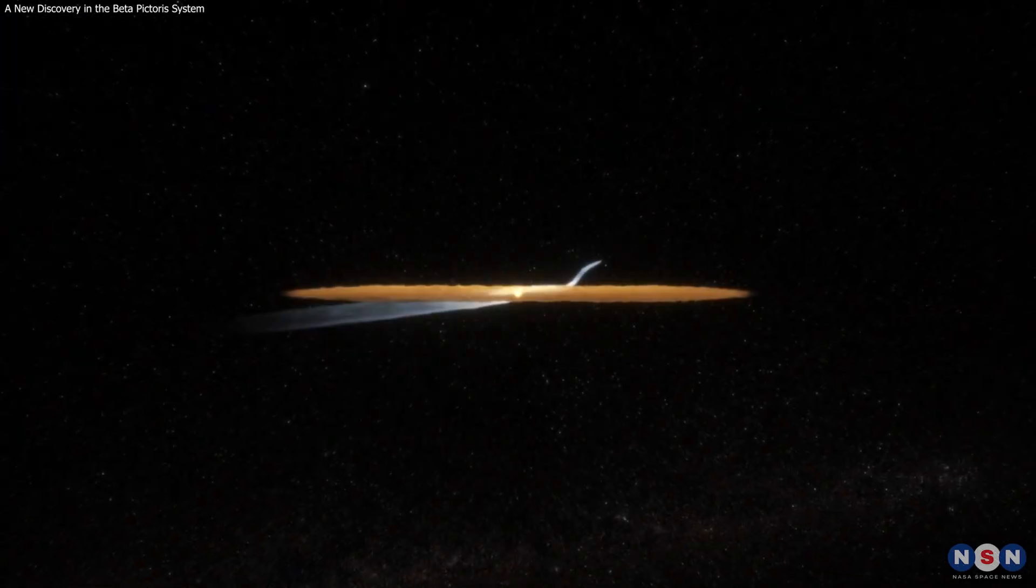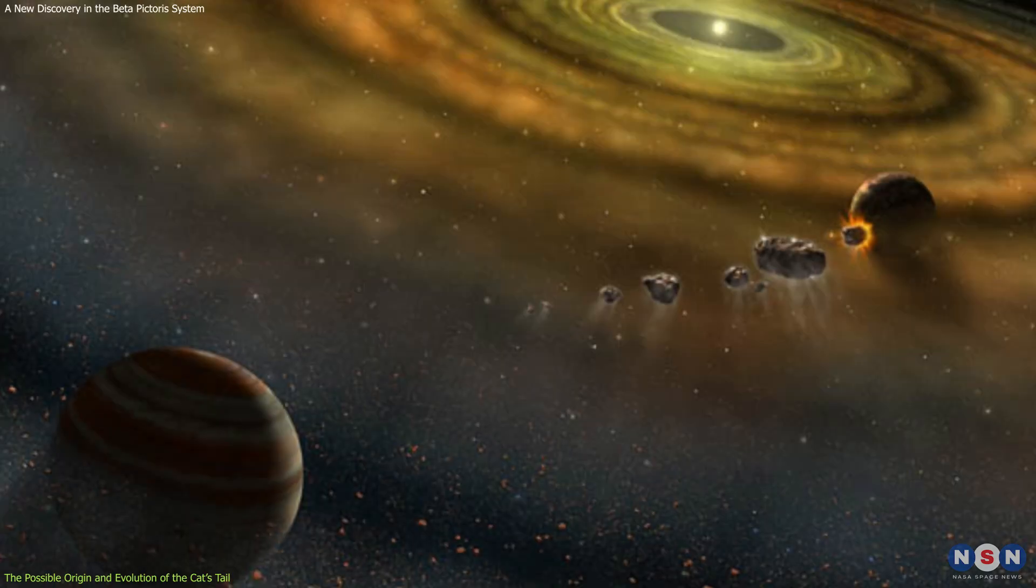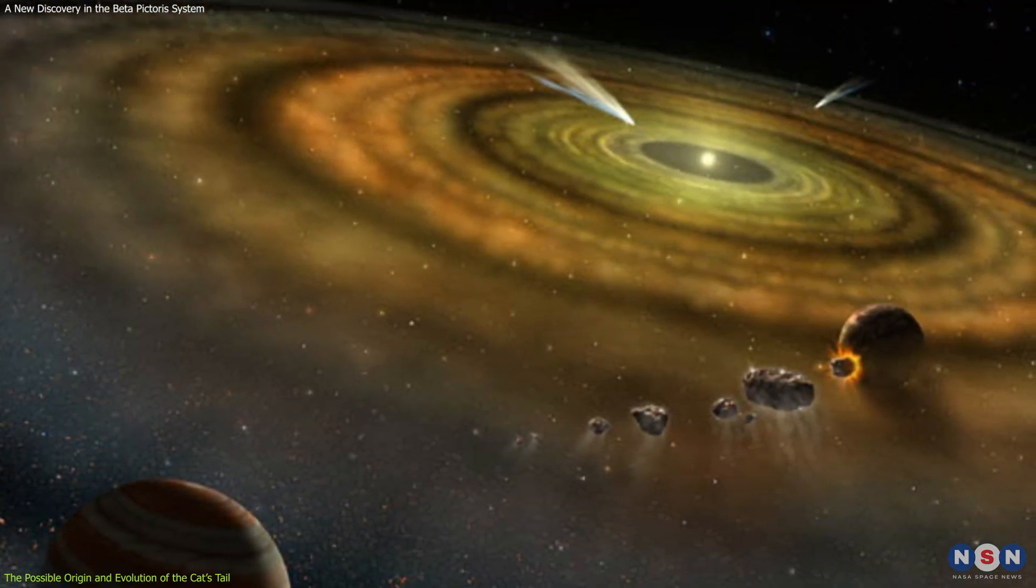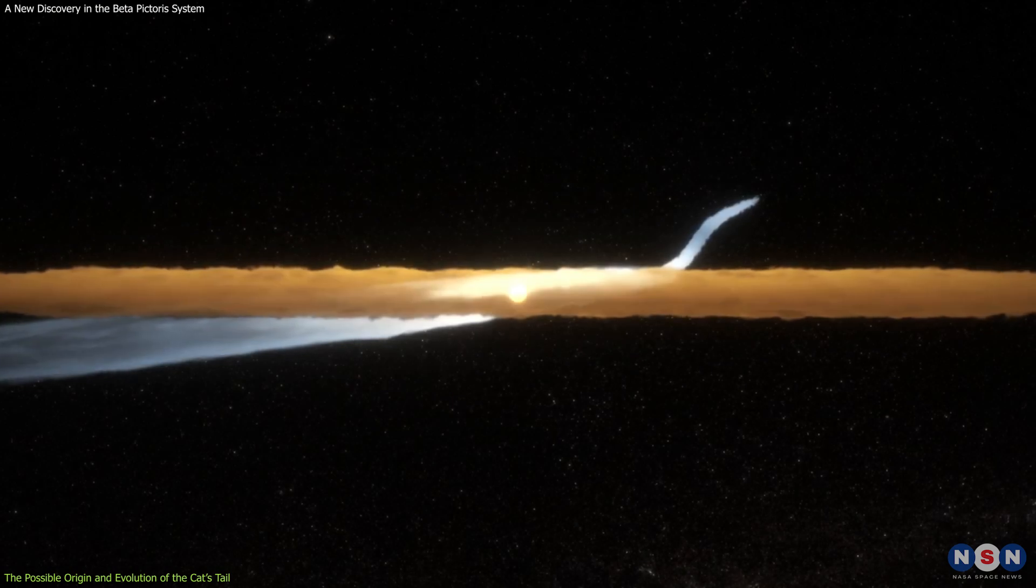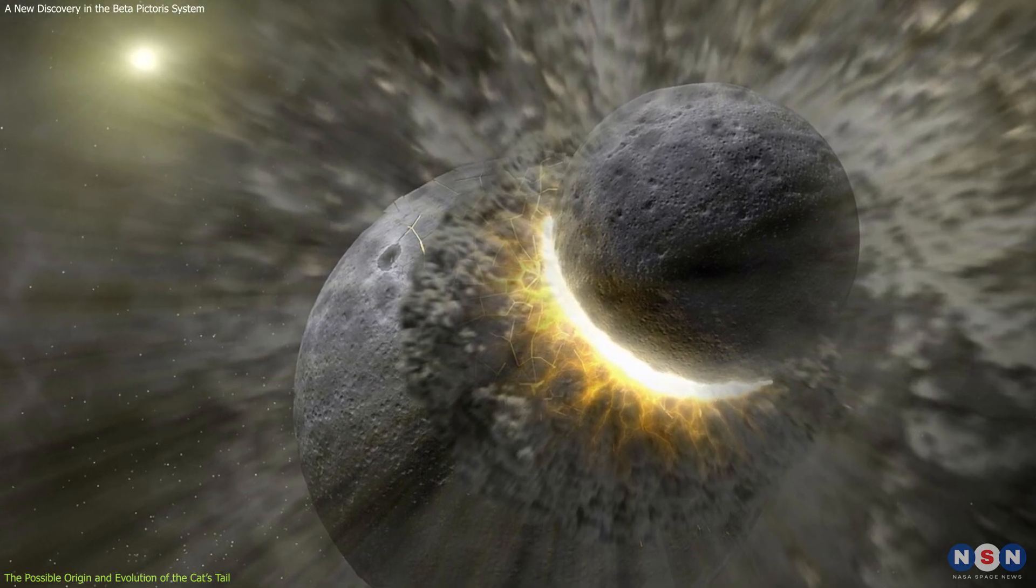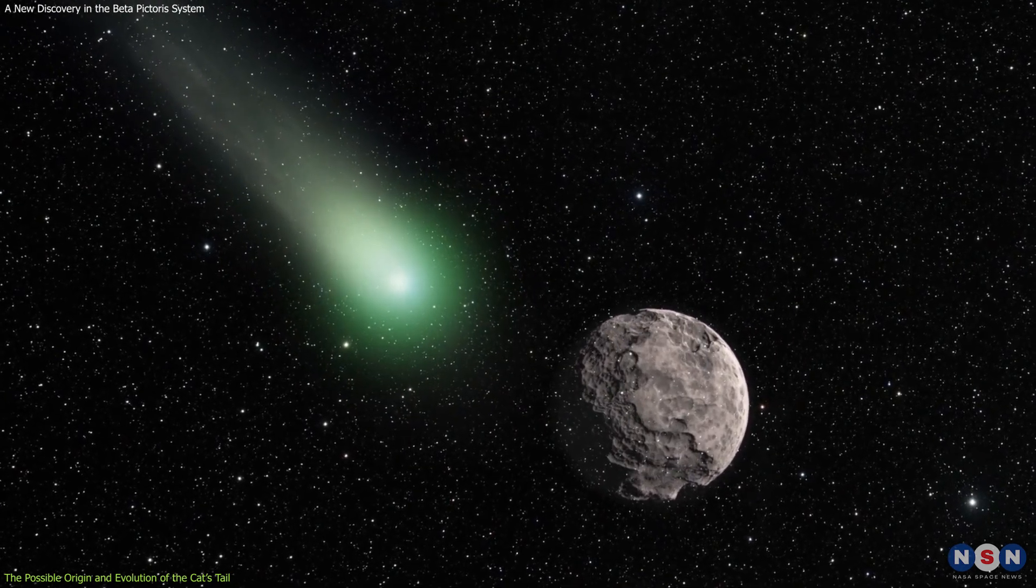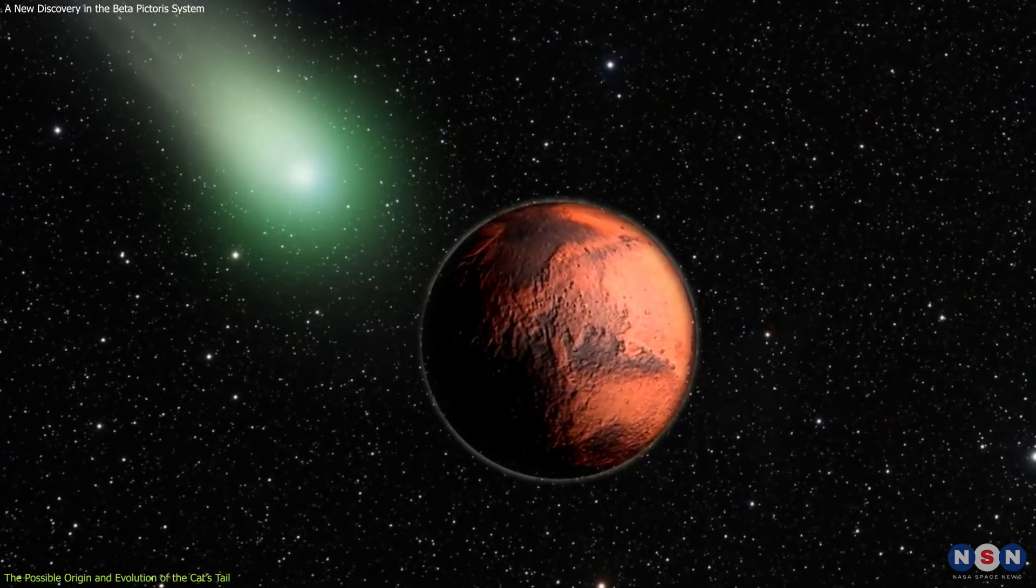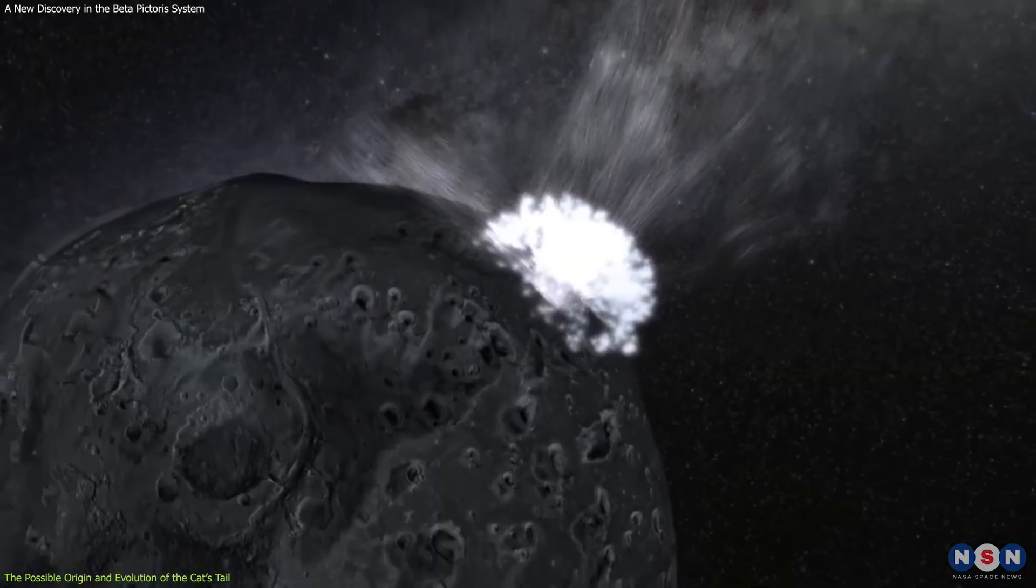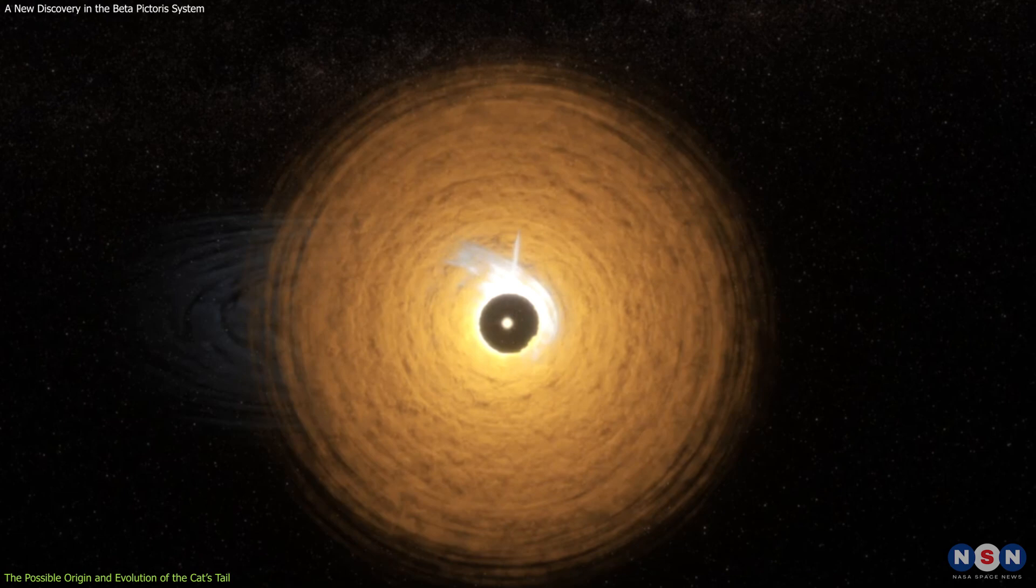The cat's tail is a very intriguing feature, and it raises many questions about how it formed, and what it means for the Beta Pictoris system. One possibility is that it is the result of a dust production event, like a collision, that occurred a mere 100 years ago. This could have happened between two asteroids, or between an asteroid and a comet, or between a comet and one of the exoplanets. The impact would have ejected a large amount of dust, which then spread out along the orbit of the secondary disk, forming the cat's tail.